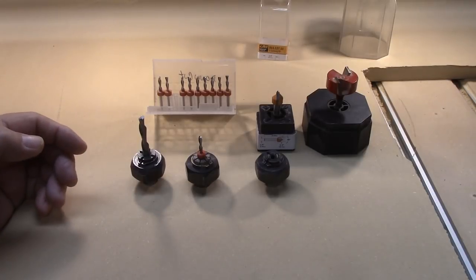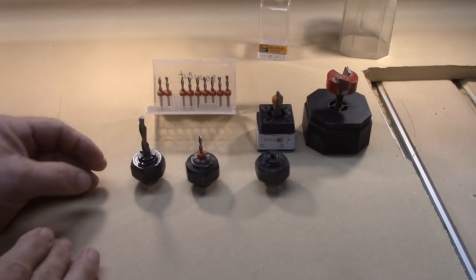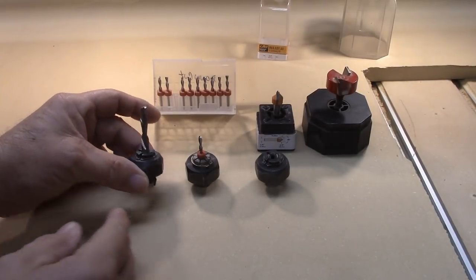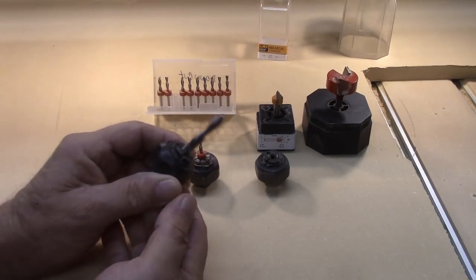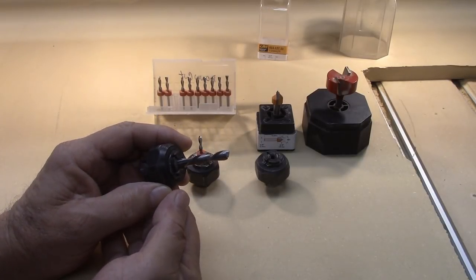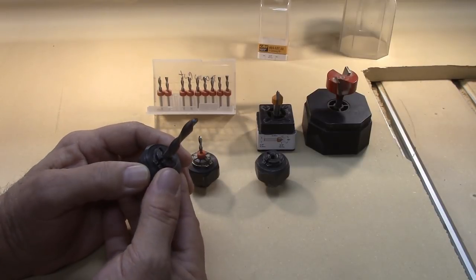So I have a selection of bits here and I'm going to walk you through some of these. Now here is a standard down cut spiral, quarter inch down cut spiral bit, in my quarter inch collet.